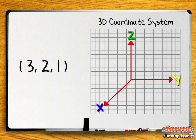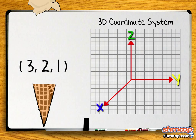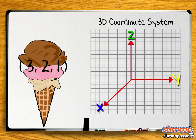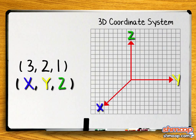So what does 3, 2, 1 have to do with anything? 3, 2, 1 is an ordered triple in the form x, y, z. Which means that to graph this point, we would go three units along the x-axis, two units along the y-axis, and one unit up on the z-axis.